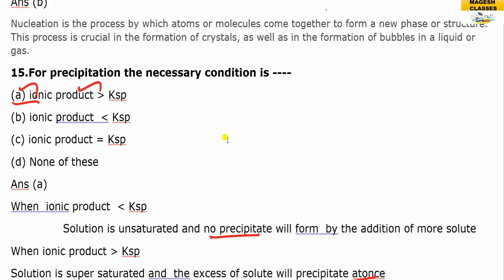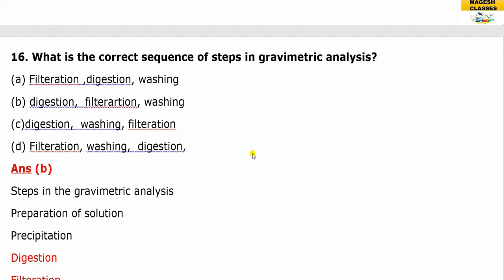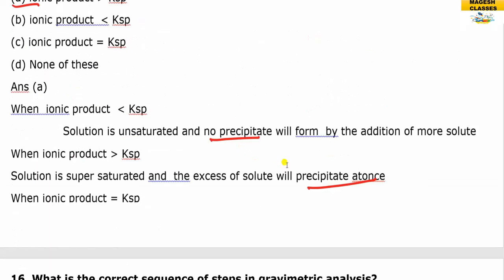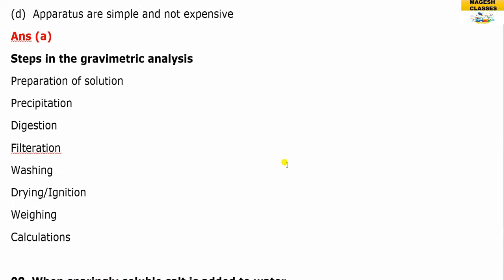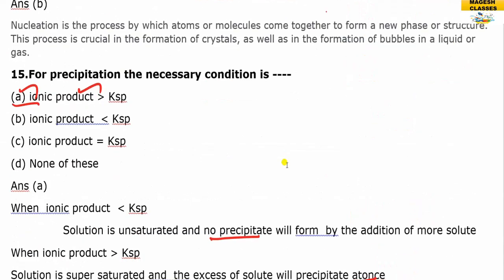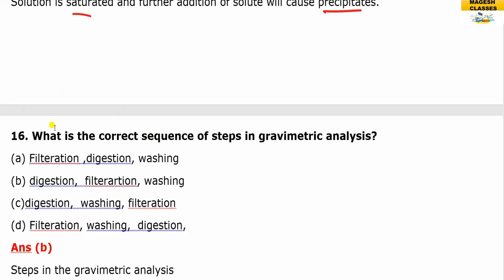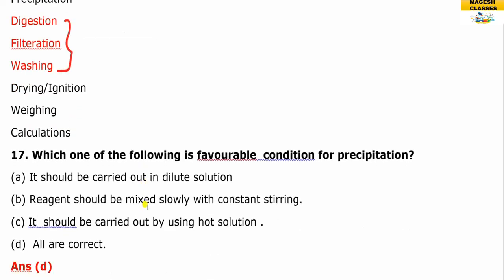The correct sequence of steps in gravimetric analysis is: preparation of solution, precipitation, digestion, filtration, washing, drying, weighing, and calculation. The answer is B.